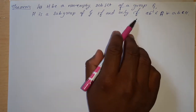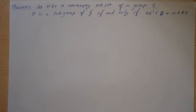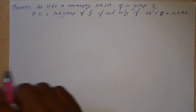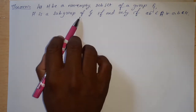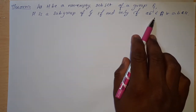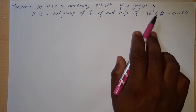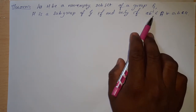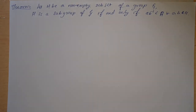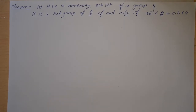Since it is an if and only if condition, we need to prove this theorem in both directions. First, by considering H as a subgroup we need to satisfy this result, and in the converse part we consider AB inverse belongs to H and then prove that H is a subgroup. To prove H is a subgroup, H itself must be a group, satisfying the four laws: closure law, identity law, and inverse law.